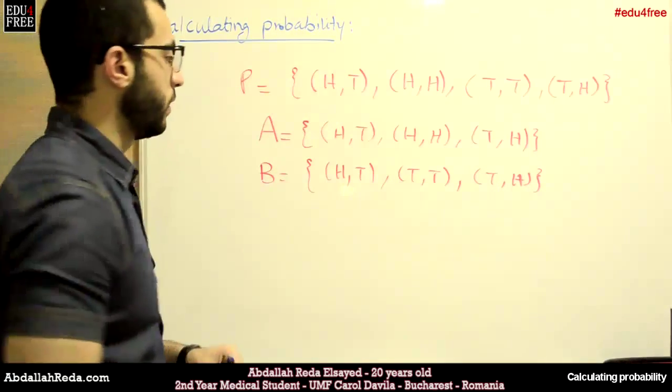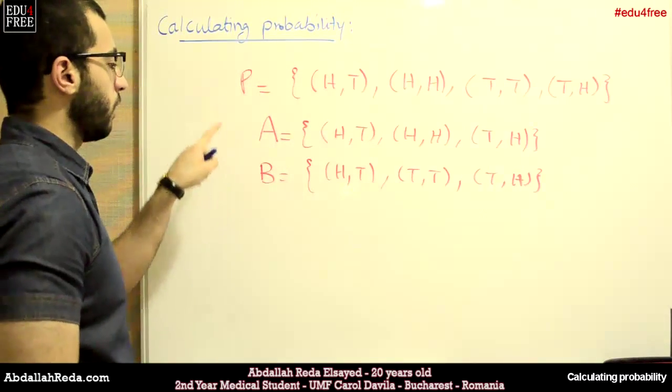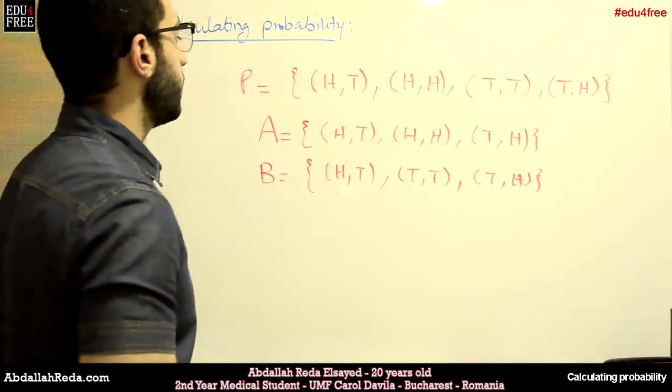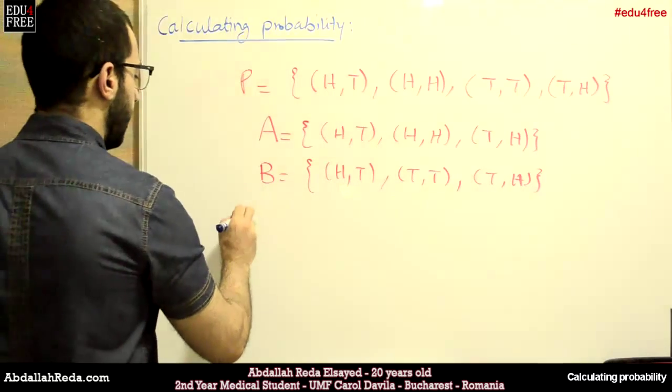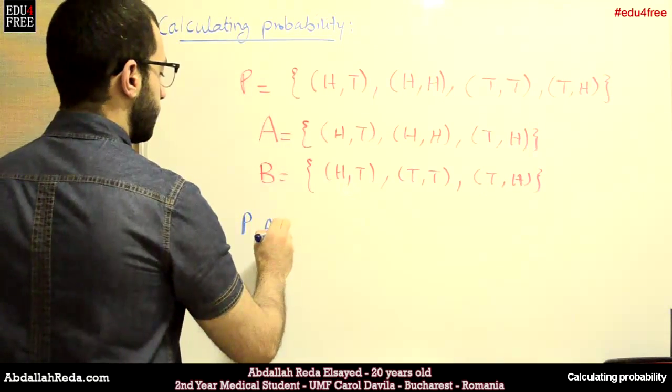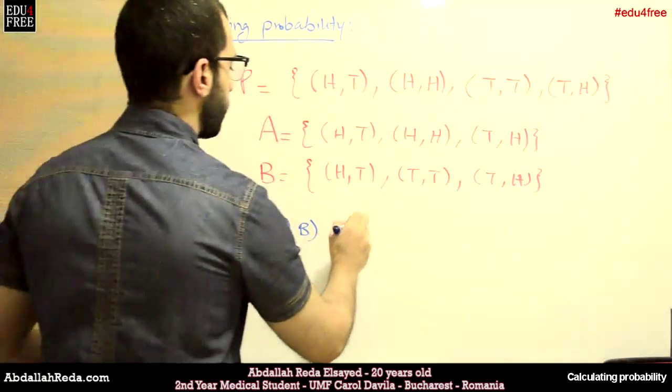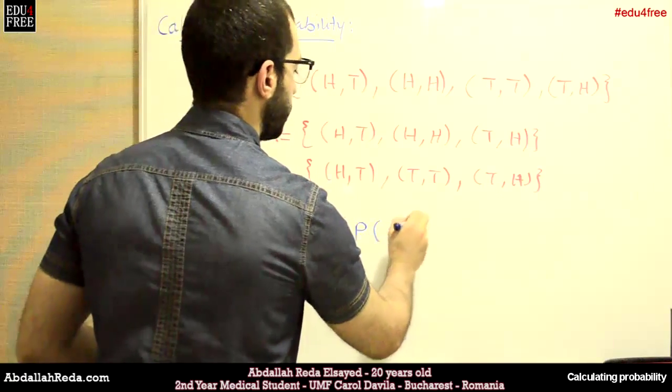So these are our two events. And we want to calculate the probability of A, the probability of B, and the probability of A intersection B, or A cross B, and the probability of A union B.